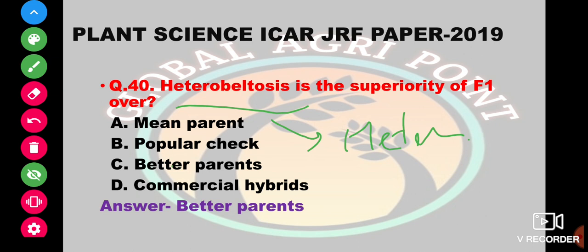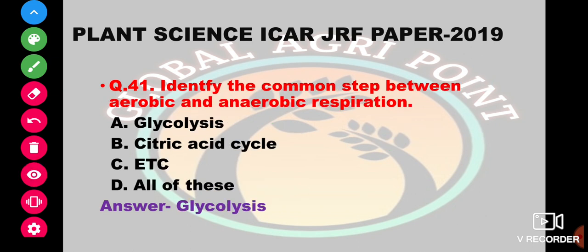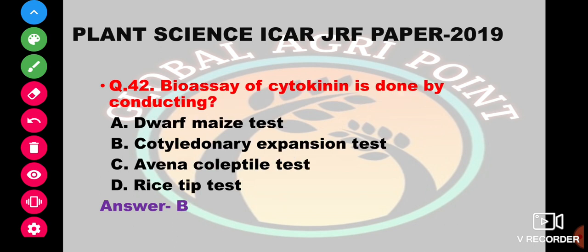Identify the common step between aerobic and anaerobic respiration. The options are glycolysis, citric acid cycle, etc., or all of these. The answer is glycolysis. The bioassay of cytokinin is done by conducting the dwarf maize test, cotyledon expansion test, coleoptile test, or rise tip test. The answer is cotyledon expansion test.